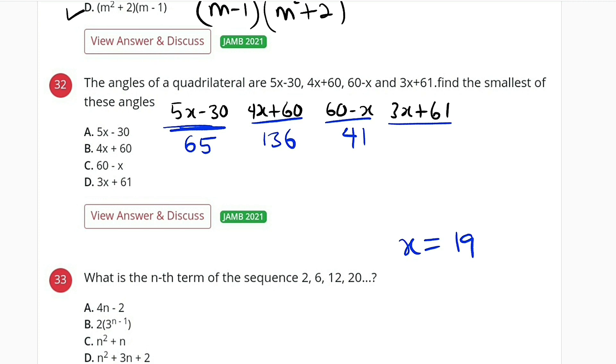And lastly we have 3x, which is 3 times 19 plus 61, that will give us 118.